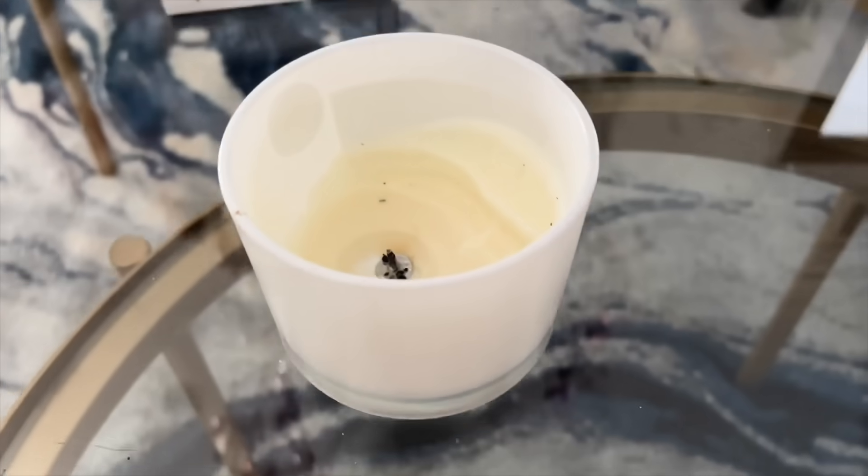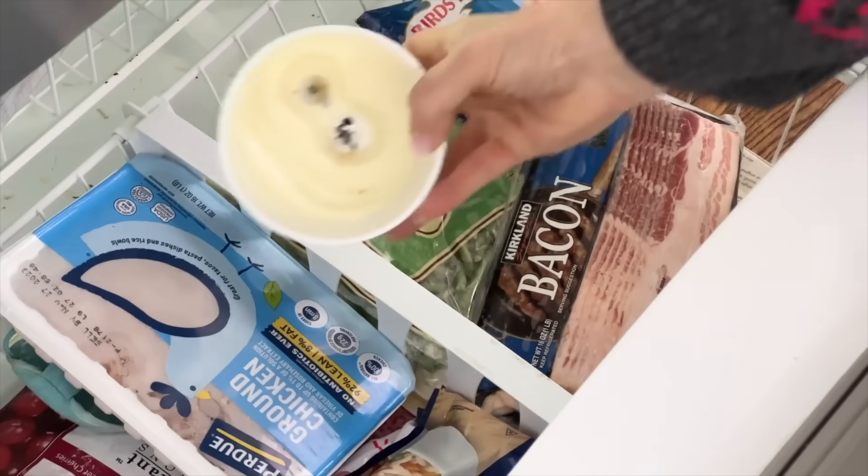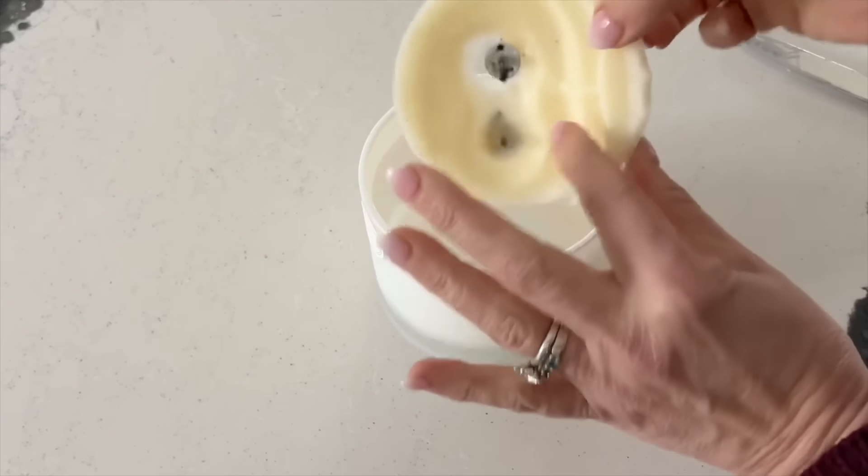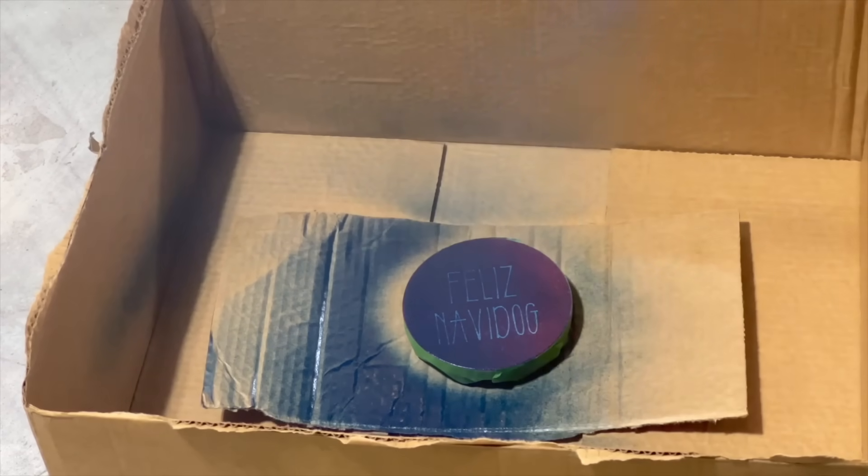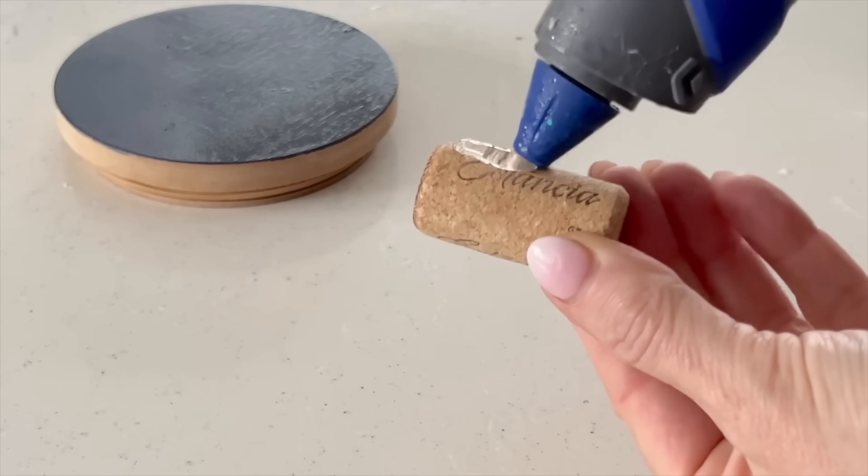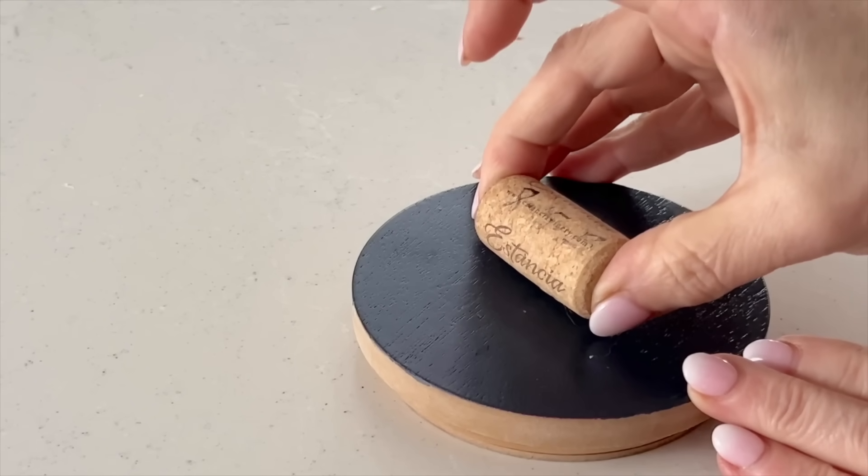If you have a jar candle with a lid, remove the candle wax in the same manner. Take the lid of the jar and place painter's tape around the side of the lid. Now spray paint the top of the lid. Take a used wine cork and attach it to the top of the lid.